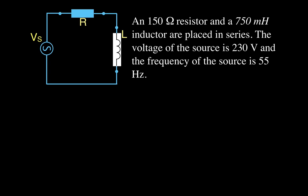In today's video we're going to be going over AC power for RL circuits. We have a 150 ohm resistor placed in series with a 750 millihenry inductor, and a voltage source of 230 volts with a frequency of 55 Hz. You can see a diagram of our circuit here.